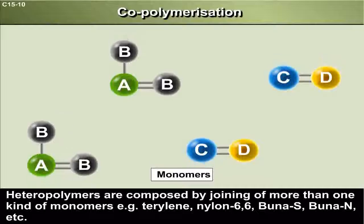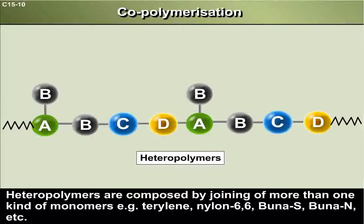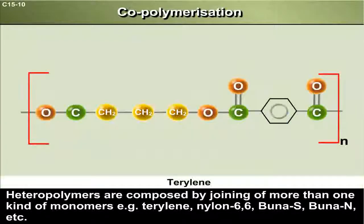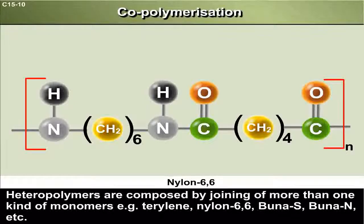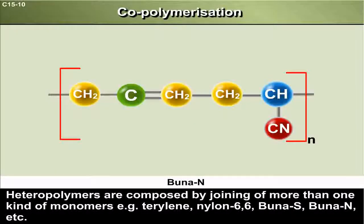Whereas heteropolymers are composed by joining of more than one kind of monomers, for example terylene, nylon-6,6, buna-S, buna-N, etc.